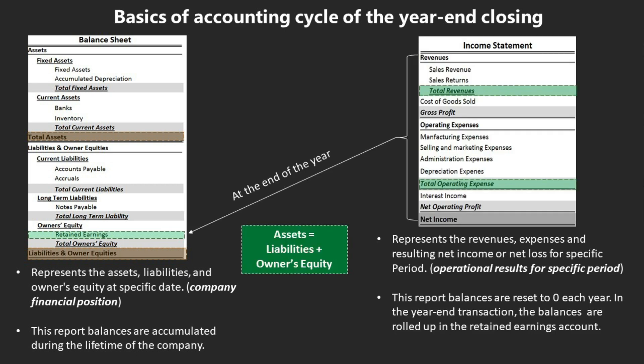The balances of P&L accounts are moved to retained earnings accounts in the balance sheet. The balances of P&L accounts are reset to zero each year, and of course the balances are rolled up in the retained earnings account.